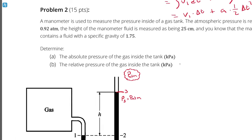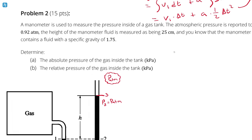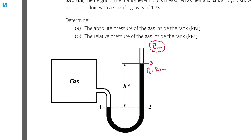I was also given the height difference of 25 centimeters, which refers to H in the diagram. This height of the fluid is going to contribute a pressure difference, so the pressure at state 3 is not the same as state 2. But I can use that height along with the density of the fluid to figure out its contribution to the pressure at state 2. States 1 and 2 are at the same height, and because they're connected by the same constrained fluid, Pascal's law tells us that P1 equals P2.